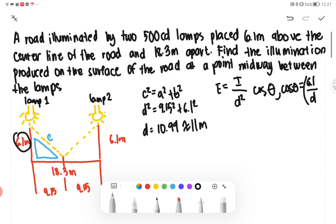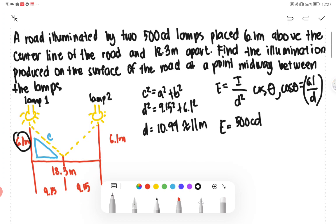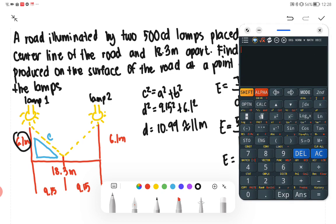We will have the value of E is equivalent to I, which is equivalent to 500 CD, all over our D, which is simply 11 squared, multiplied by the value of our cosine theta, which is just simply the distance between the floor to the light, which is 6.1 meter all over our D, which is approximately 11 meter. Our E value is equivalent to 500 over 11 squared multiplied by 6.1 all over 11, which is equivalent to approximately 2.3 lux.